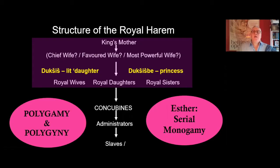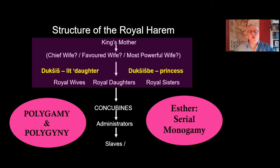Within the harem, there were also other women — daughters, royal sisters — who all made a part of the royal harem too. We know that in Old Persian, the word for all of these women of the royal family together was dukshish, which literally means a princess, or dukshishpi, which means princesses.